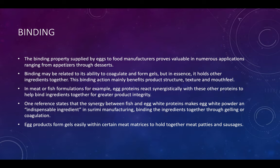Egg binding properties: the binding properties supplied by eggs to food manufacturers prove valuable in numerous applications ranging from appetizers through desserts. Binding may be related to the egg's ability to coagulate and form gels, but in essence it holds other ingredients together. This binding action mainly benefits product structure, texture, and moisture retention. In meat or fish formulations, for example, egg proteins react synergistically with other proteins to help bind ingredients together for greater product integrity. One reference states that the synergy between fish and egg white protein makes egg white powder an indispensable ingredient.